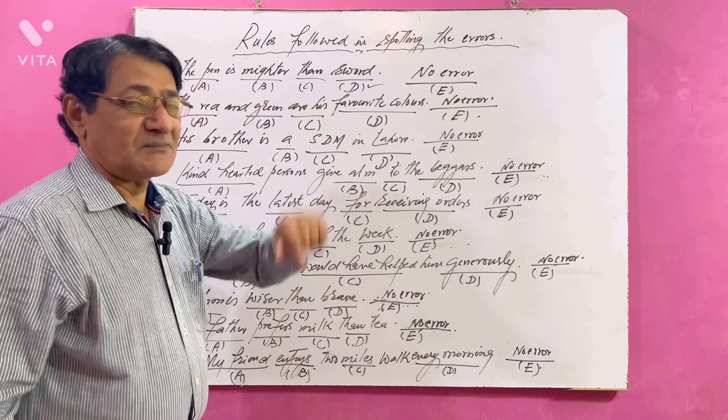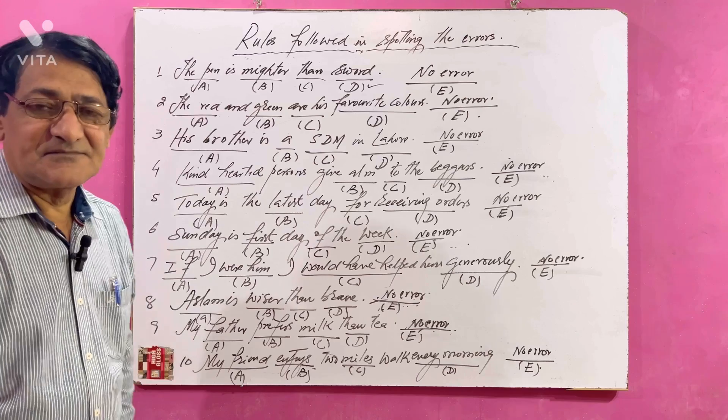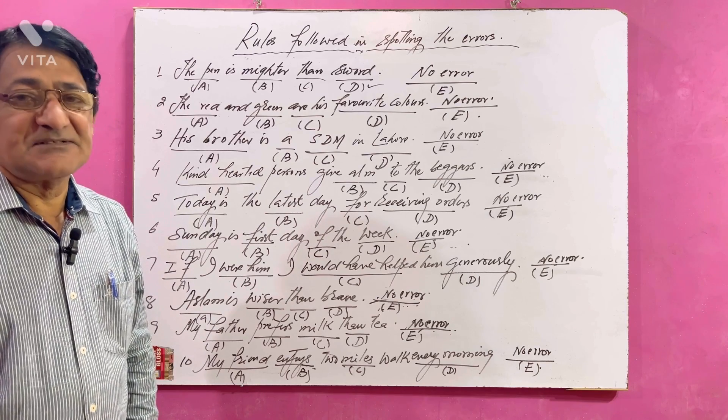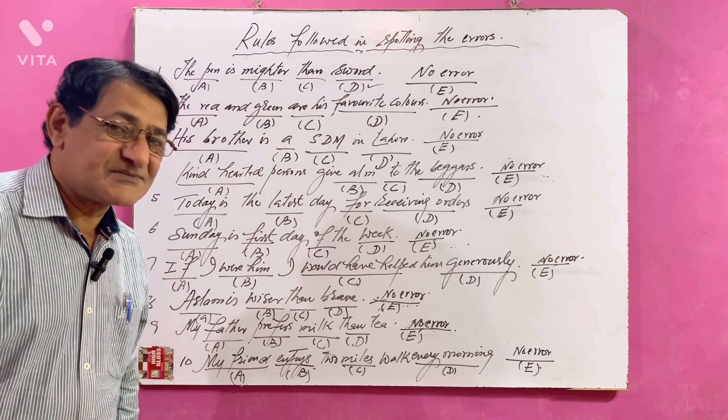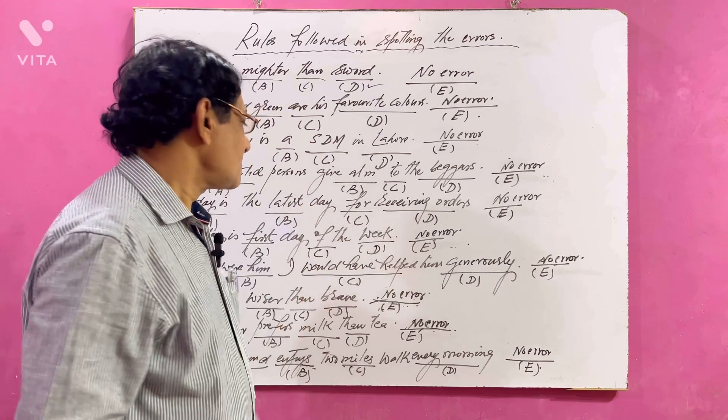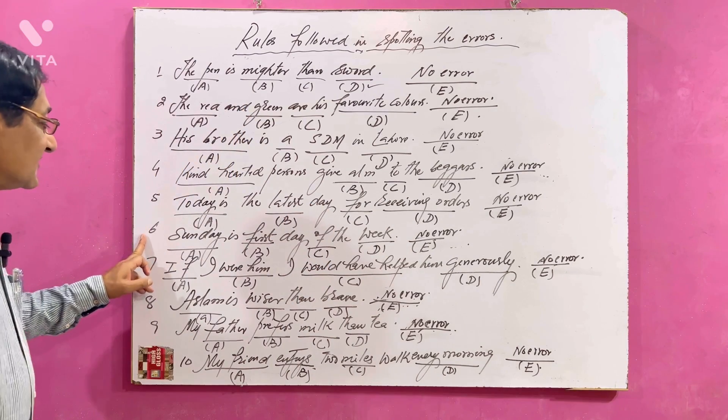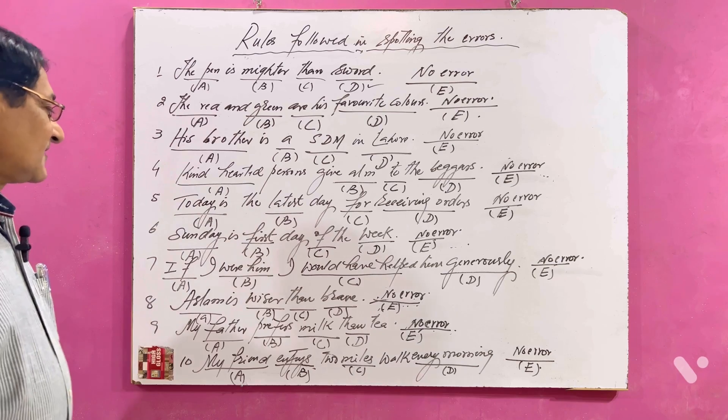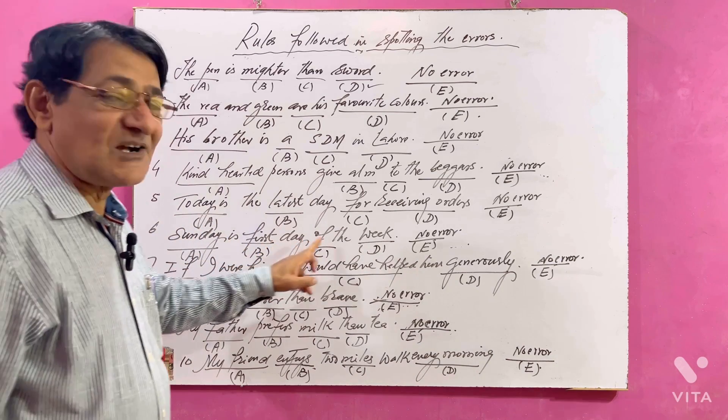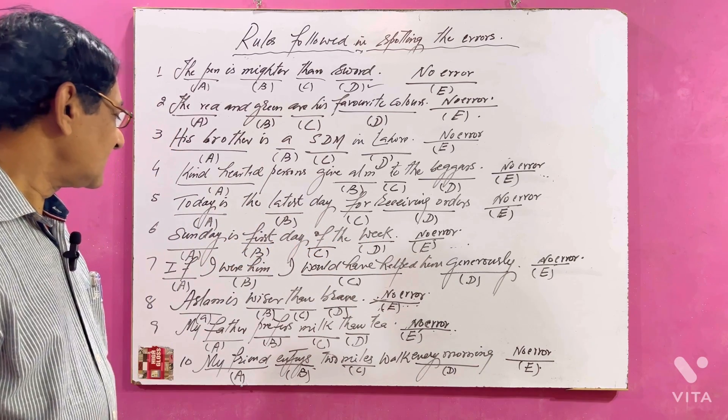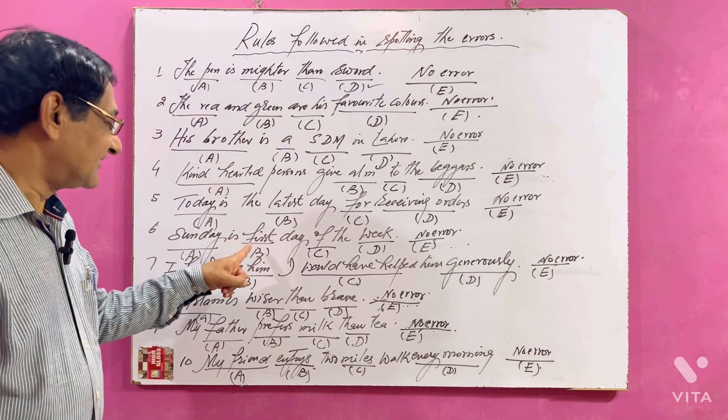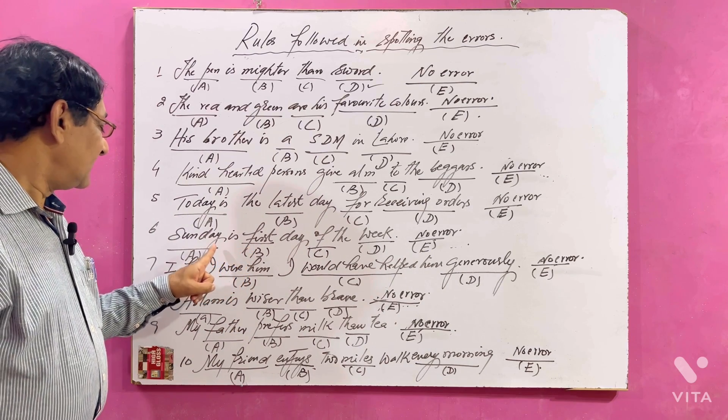Number six: Sunday is first day of the week. There's error here. In case of B, it will be like 'Sunday is the first' - article has to be used here.